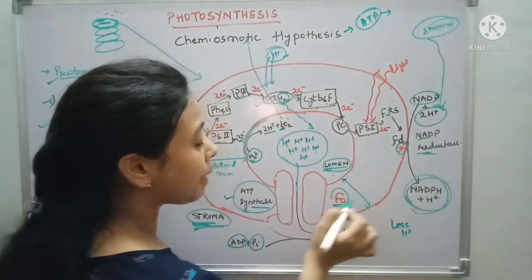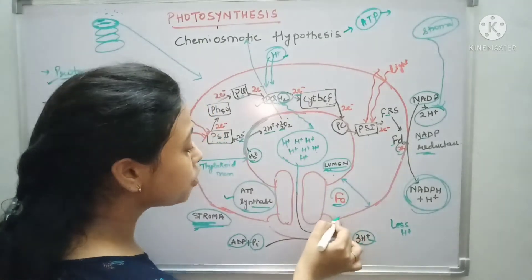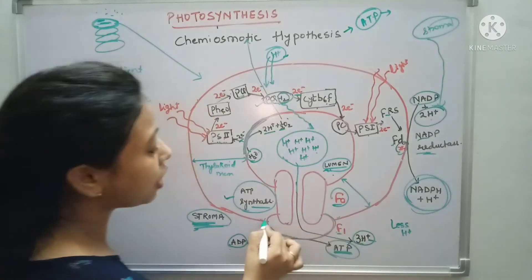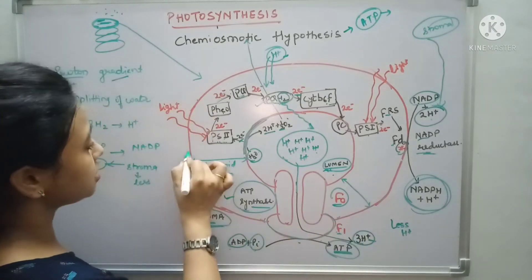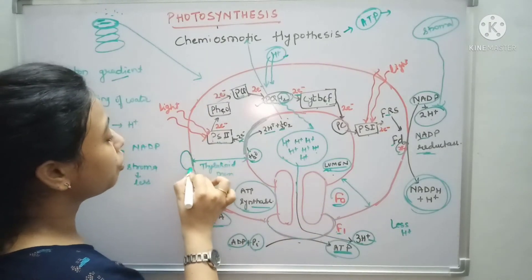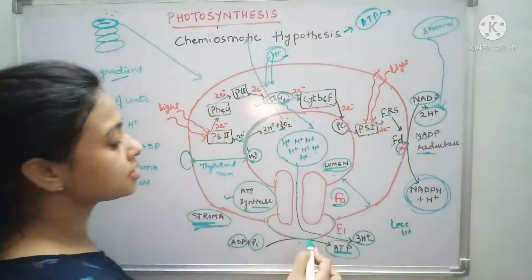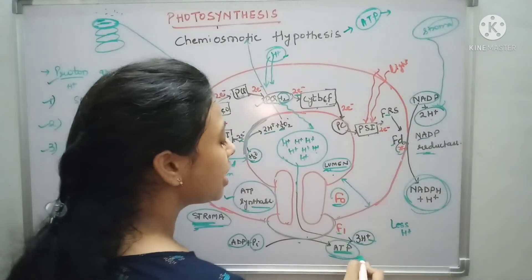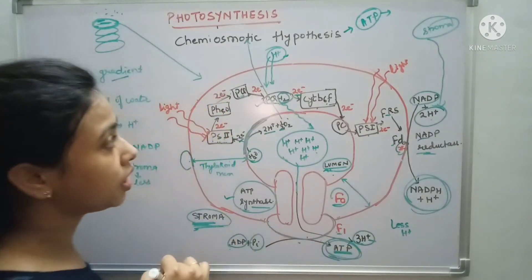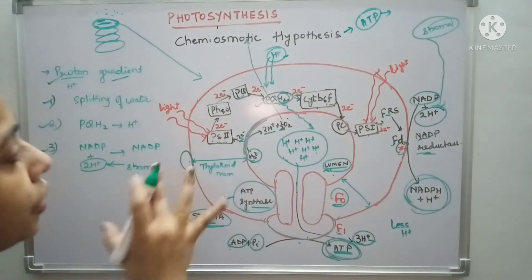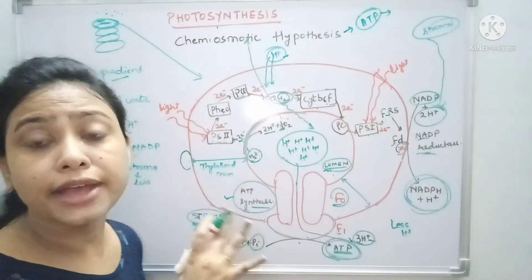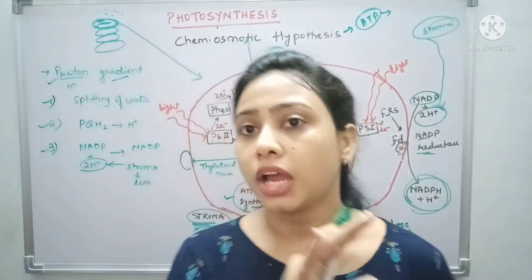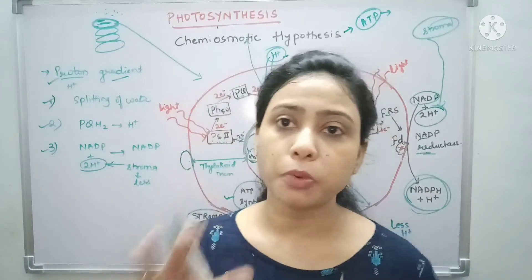In the ATP synthase complex there are two portions: F0 and F1. The F0 portion is totally embedded in the thylakoid membrane, while F1 protrudes outside the surface of the thylakoid membrane. F1 is where ATP is released. This is how ATP formation occurs via the chemiosmotic hypothesis.